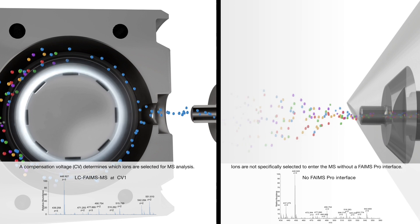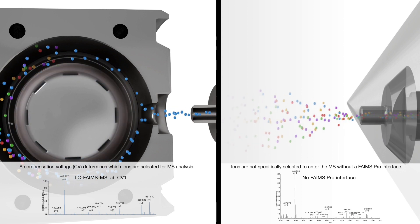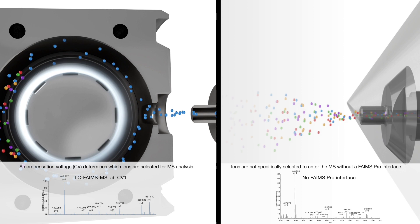The inner electrode also blocks direct line of sight transmission of neutrals that may increase the robustness of the mass spectrometer.